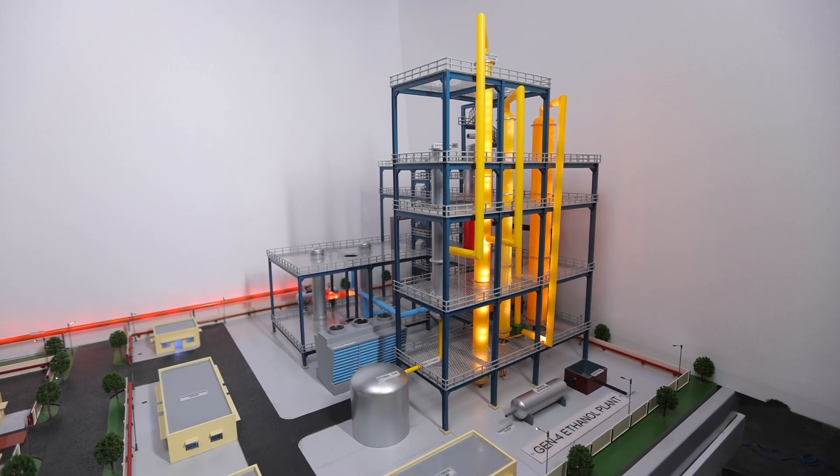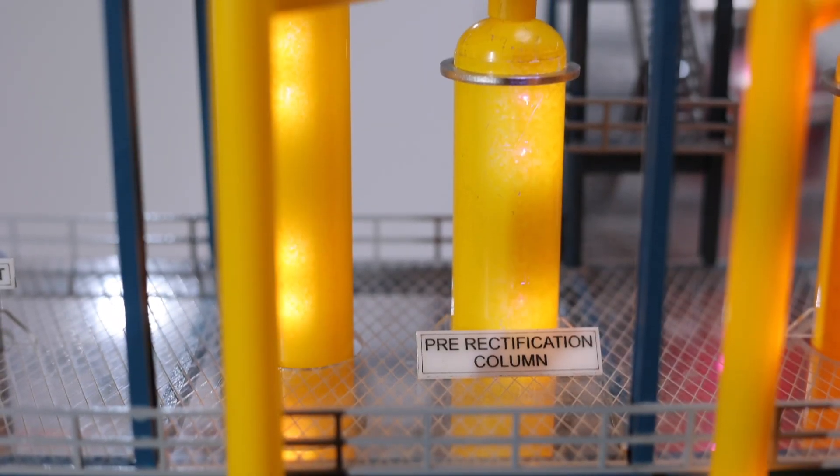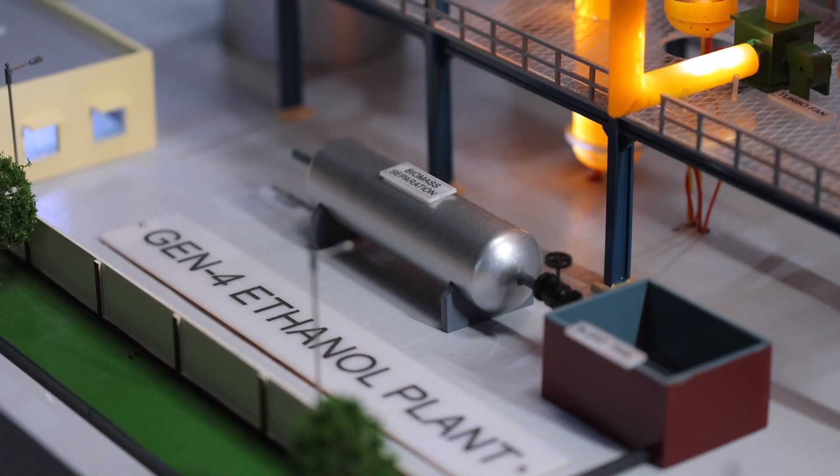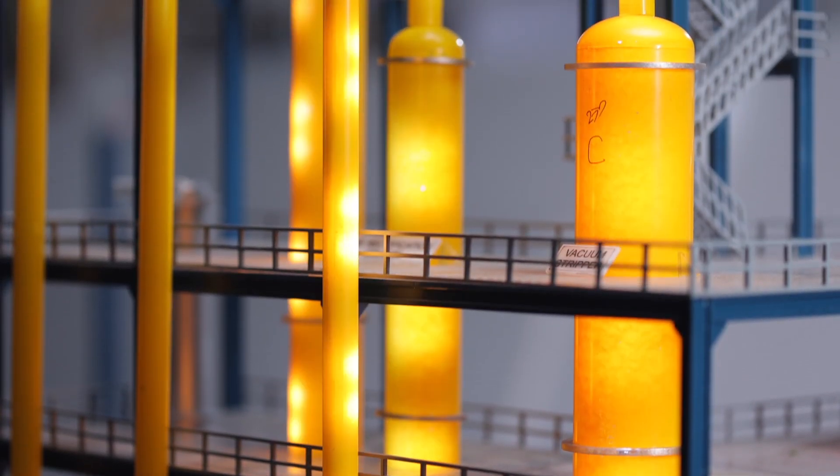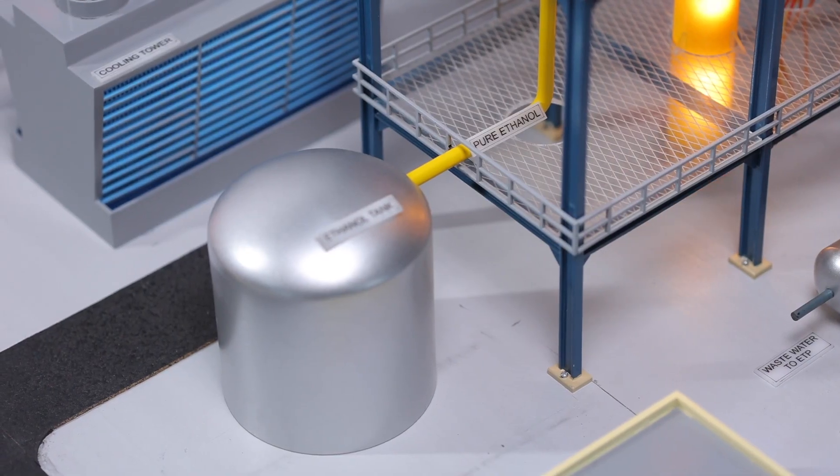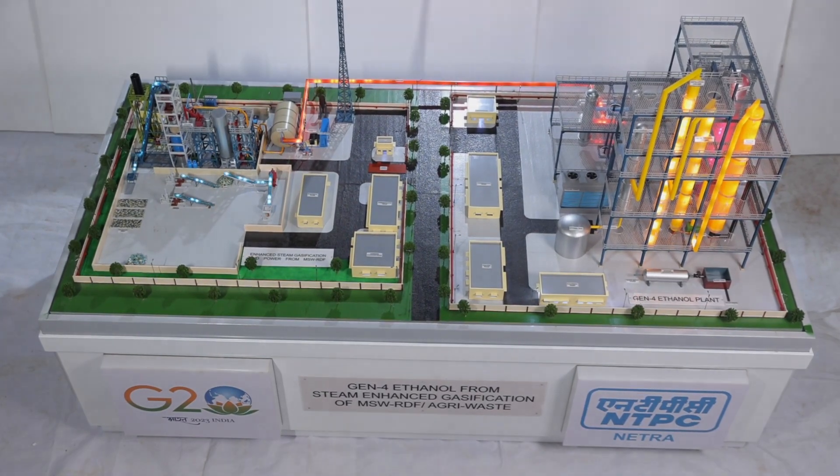Post synthesis, distillation and dehydration: The broth with 1-4% ETOH is sent to stripper column under vacuum, where ethanol is stripped to concentration of around 70-80% ETOH, and through different distillation and dehydration processes, ethanol of purity of 99.6% is produced.